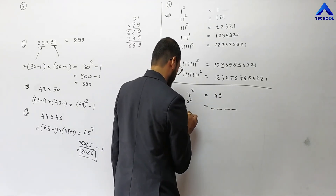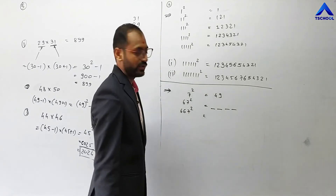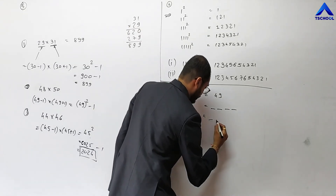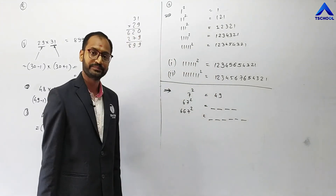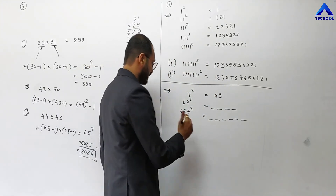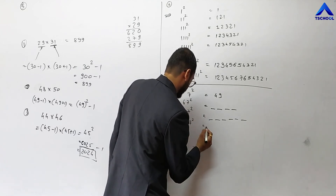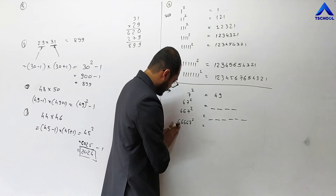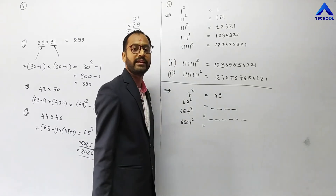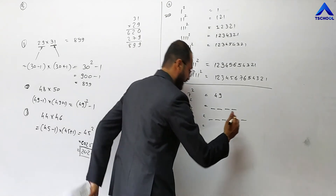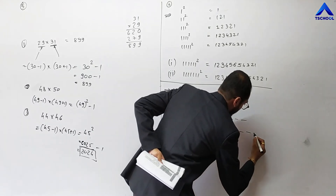For 667 squared — a 3-digit number — we get a 6-digit answer. For 6667 squared — a 4-digit number — we get an 8-digit answer. The pattern for these numbers (6...67) is: the last digit is always 9, the previous digits are 8 (one less than 9), and the remaining places are filled with 4.